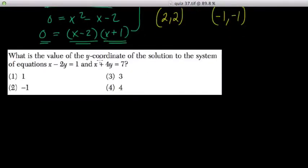What is the value of the y-coordinate of the solution to the system x minus 2y equals 1 and x plus 4y equals 7?